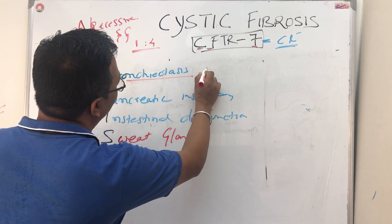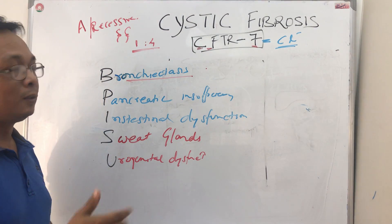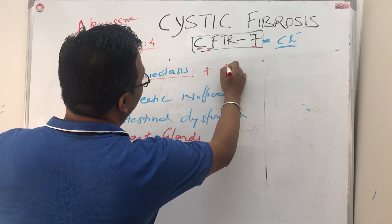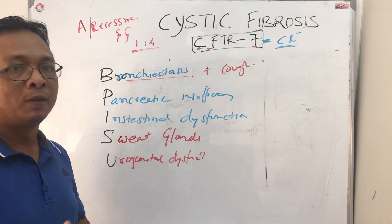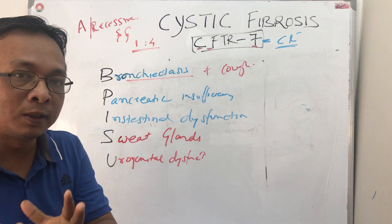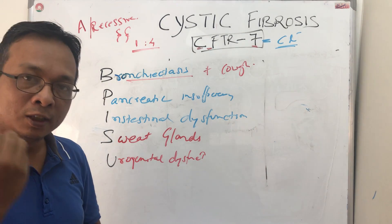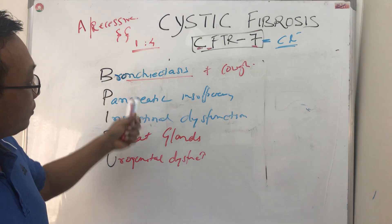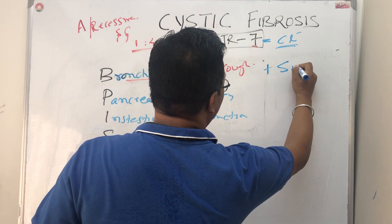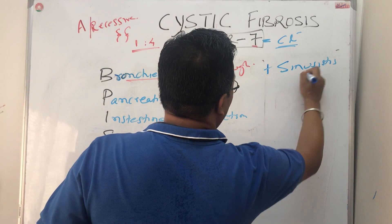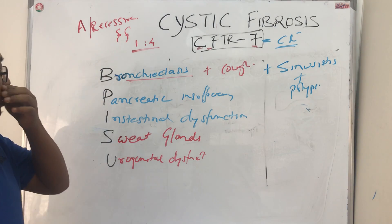B for Bronchiectasis covers all the lung clinical features. Along with bronchiectasis, you have to write all the lung clinical features: there will be persistent cough with sputum production, and that sputum will be very thick — most of the time it is greenish in color. Sometimes in severe cystic fibrosis there is hemoptysis also. Along with that, don't forget there will be nasal polyps in about ten percent of cases. Sinusitis plus nasal polyps are very common in cystic fibrosis.